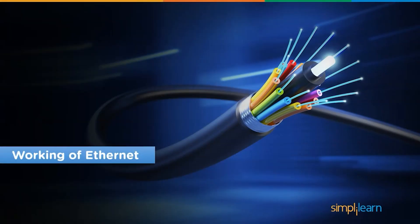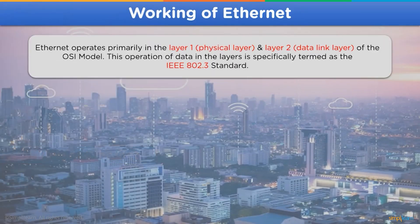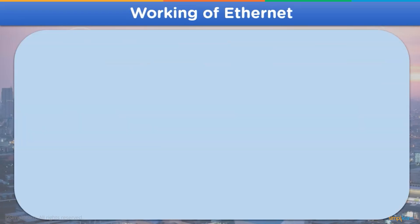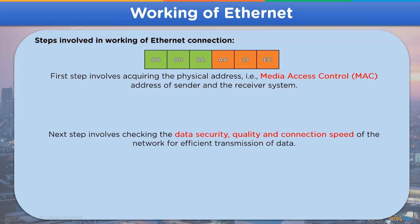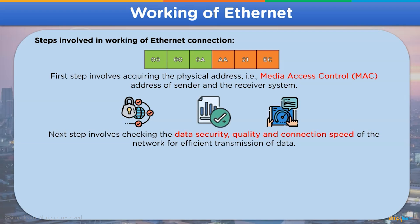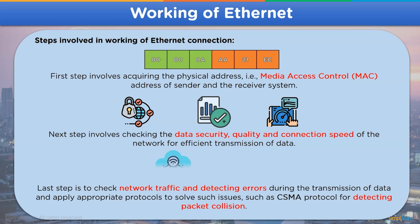Now let's look into the working of Ethernet. Ethernet services specifically work in the first layer of the OSI model, known as the physical layer, and the second layer of the OSI model, also known as the data link layer. The functioning of Ethernet can be divided into three different parts. The first step is acquiring the physical address, that is the MAC address (Media Access Control address), of the sender and the receiver device. The second step is to check the data security, quality of the data, and the connection speed of the transmission channel for efficient and smooth transmission of data over the network.